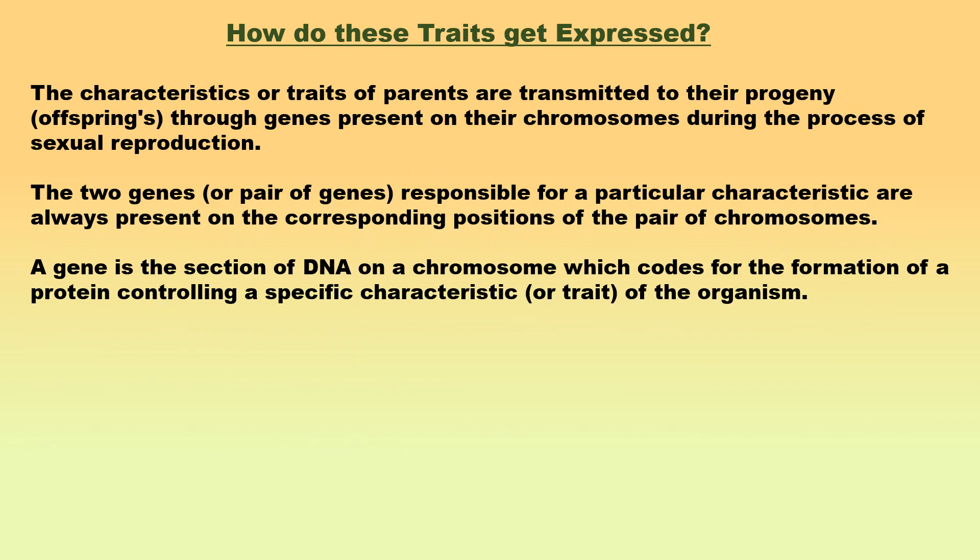How do traits get expressed? Genes are responsible for the characteristic features or traits of an organism, plant or animal. The characteristics or traits of parents are transmitted to their progeny through genes present on their chromosomes during the process of sexual reproduction. Genes work in pairs — there is a pair of genes for each characteristic of an organism: one is the dominant gene and the other is the recessive gene. Each parent possesses a pair of genes for each characteristic on a pair of chromosomes. Each parent passes only one of the two genes of the pair for each characteristic to its progeny through gametes.